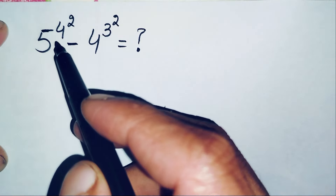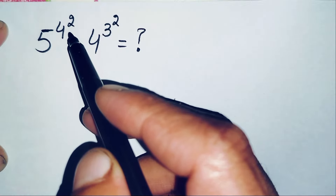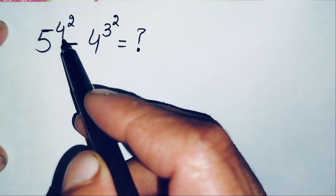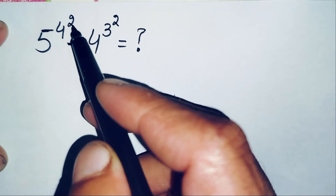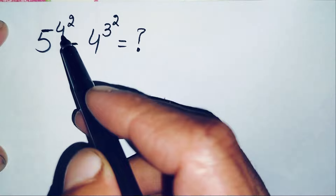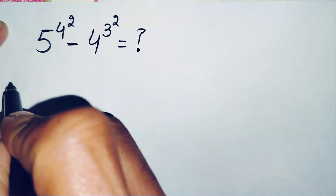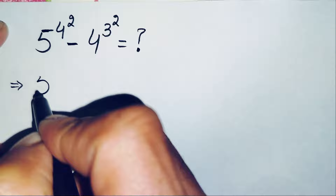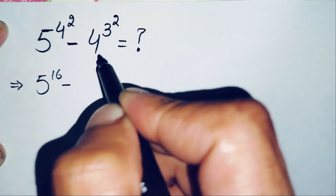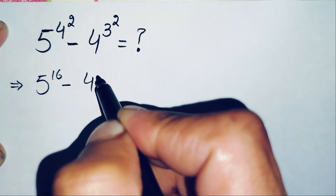First of all, we will find the value of 4 raised to power 2 and 3 raised to power 2. Power squared means we multiply the power 2 times. So 4 times 4 is 16, so this power will become 5 raised to power 16. And 3 squared is 3 times 3 is 9, so this will become 3 raised to power 9.